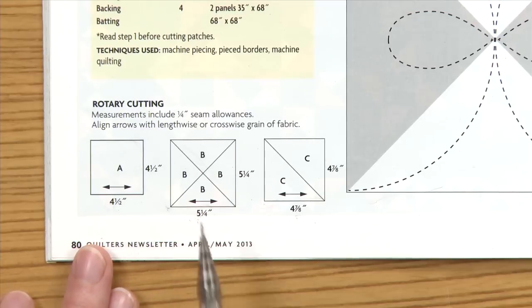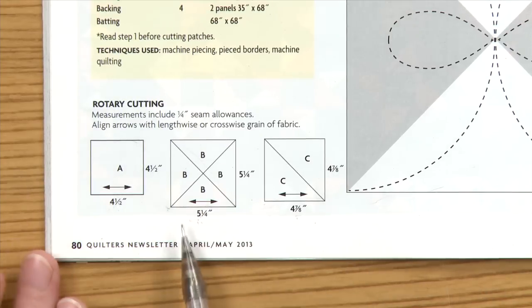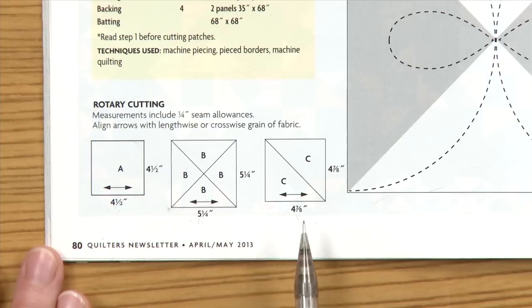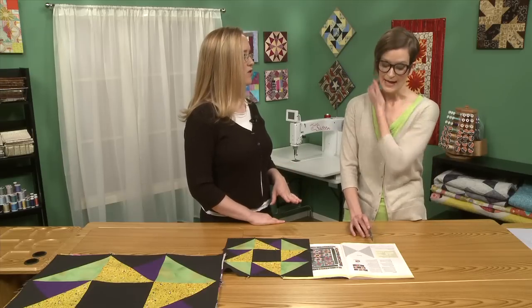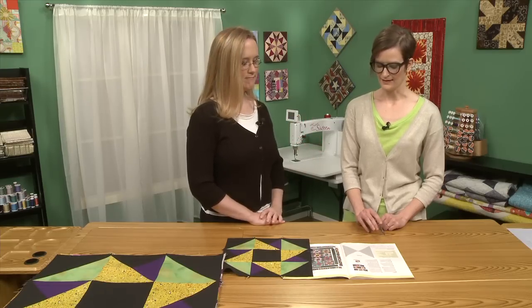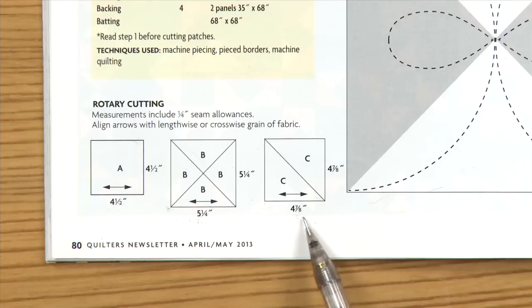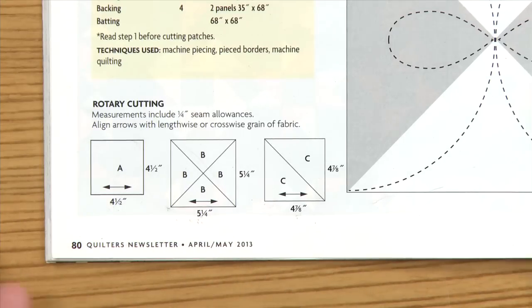And the same thing for the other patches — whenever you see this crisscross, that means it's a quarter square triangle. The seam allowance for that: you cut those one and one-quarter inch bigger than your finished size. That's standard no matter how big the finished size of your quarter square triangle is going to be — you're always going to cut it one and a quarter inches larger than the finished size of the long side. And for the half square triangles, you always add seven-eighths of an inch to the finished size. So all of these basically finish at four inches, which makes it really simple for this pattern.